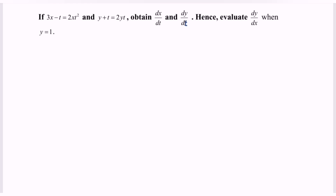Given the situation: 3x minus t equals 2x·t squared, and y plus t equals 2y multiplied with t. Obtain dx/dt and dy/dt. Hence, evaluate dy/dx when y equals 1.